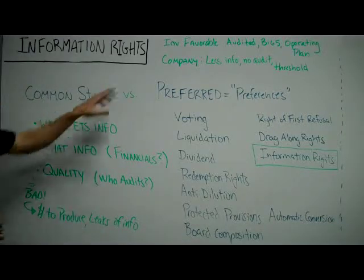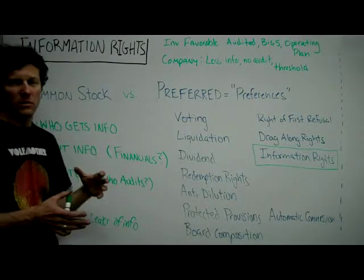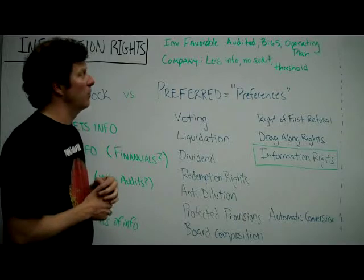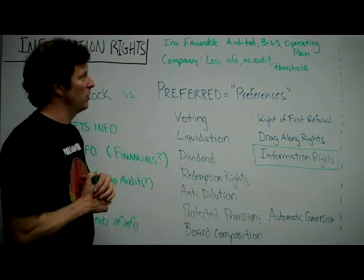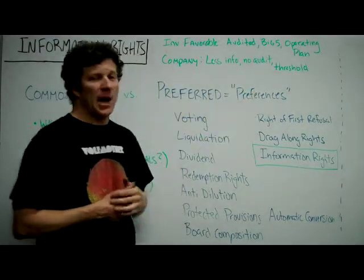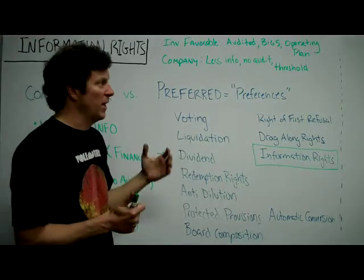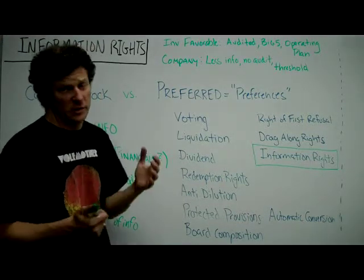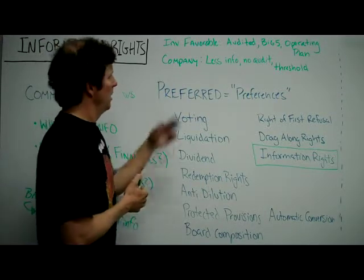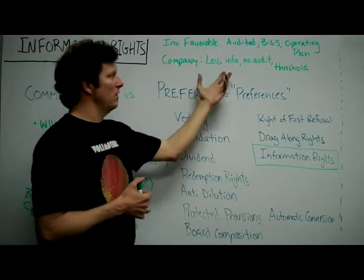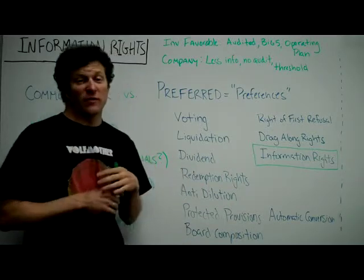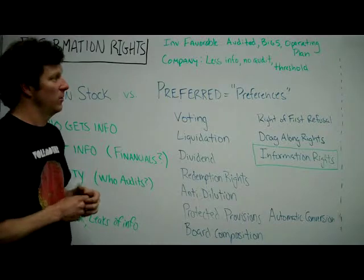Let's talk about investor-favorable versus company-favorable scenarios with information rights. An investor-favorable example would be getting audited financials by a Big Five consulting firm and an operating plan, along with all kinds of different financial information. That can be expensive and time-consuming for companies to produce, so it tends to be very favorable to investors. A company-favorable scenario would be giving less information, no auditor, and a threshold so you only have to give information to your biggest investors.